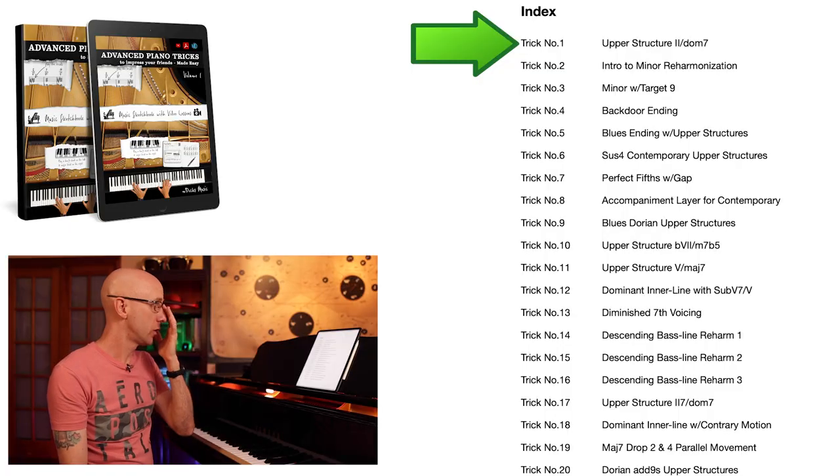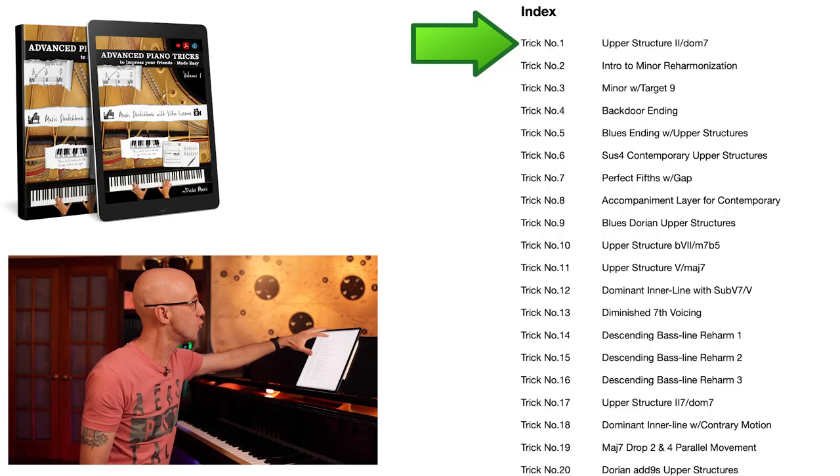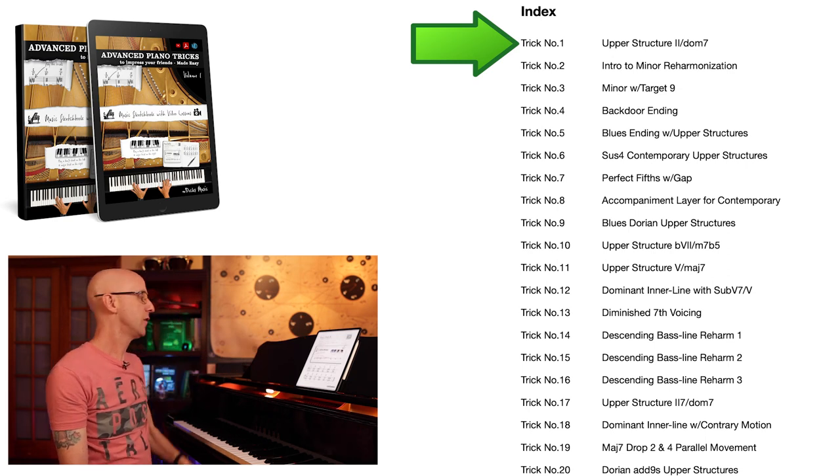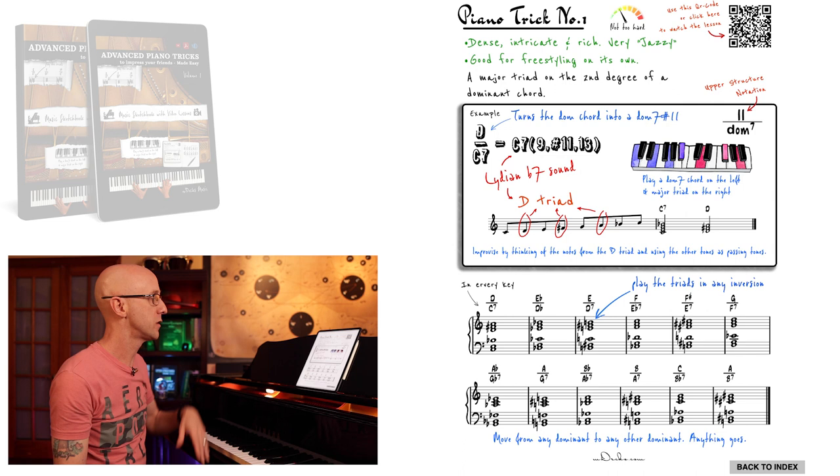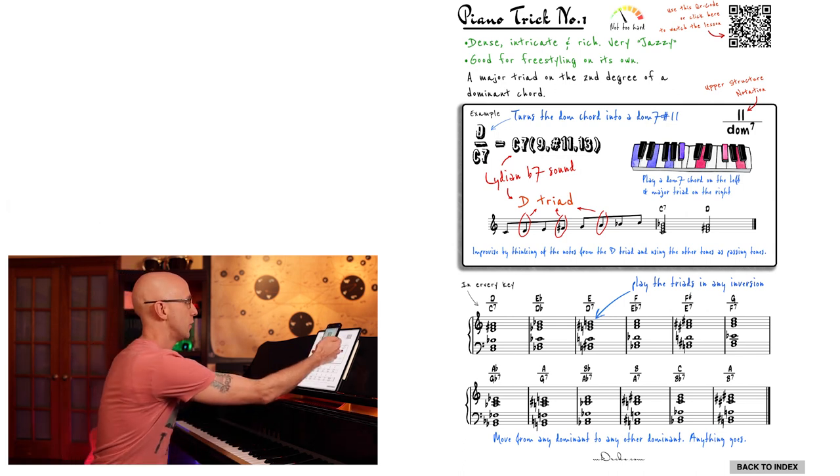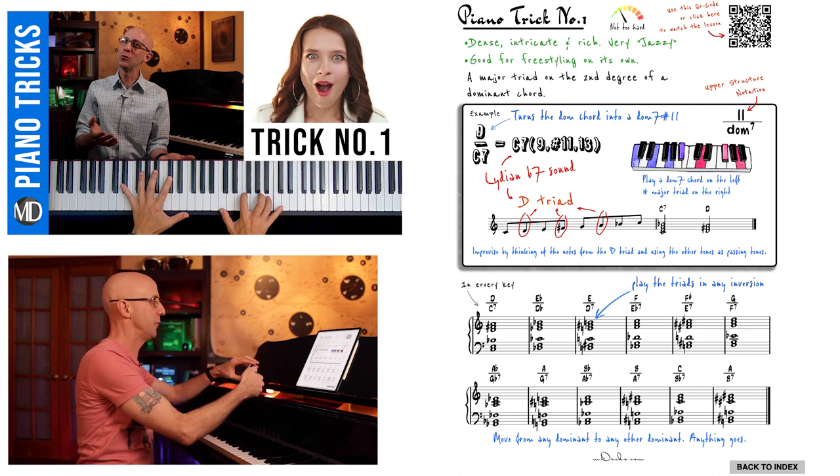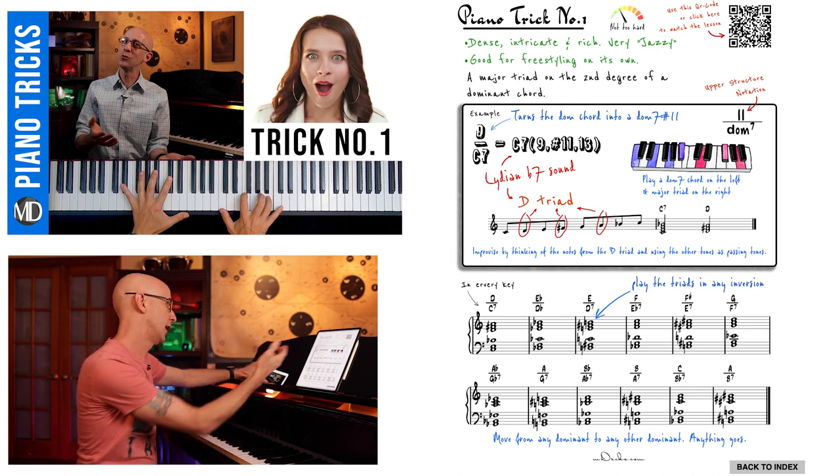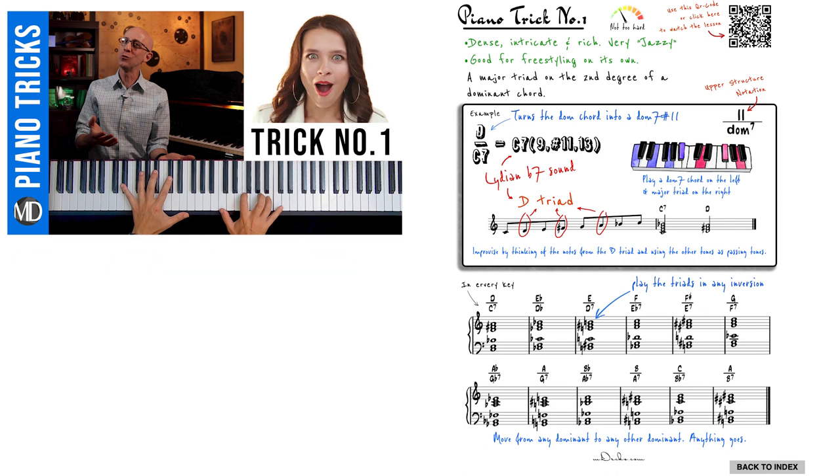Hello and welcome to another video bonus material of our Advanced Piano Tricks course volume one. We can see trick number one here in our index: upper structure two major over dominant seven. I click on it, it goes right to that trick. All the pertinent information is right there. Even better, if I just scan that QR code, I go right to the video and I can watch that on my phone while checking out the content on my tablet or any other device that I might have.